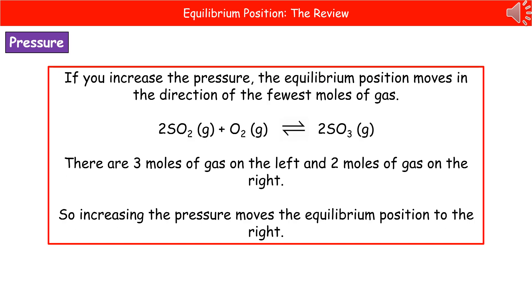The first condition that we could change is the pressure. If we change the pressure, the equilibrium position is going to move in the direction of the fewest moles of gas. To work this out, you've got to have a look at the balanced symbol equation, paying particular attention to the state symbols. The only bits you're concerned with are the G's — they're the gases.